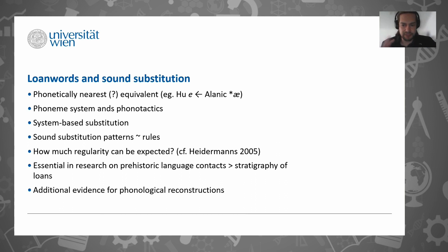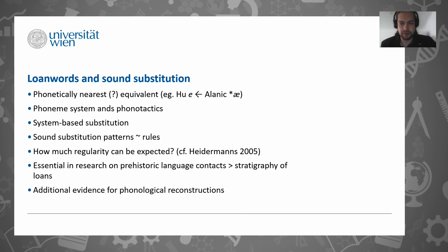What is especially important here is the idea of sound substitution, which basically means that when words are taken over from one language to another, the sound systems of the contact languages are usually not identical and the foreign sounds are substituted in some way. It is usually assumed that phonetically the nearest equivalent is used as the substitution, but there are also other ways. The main thing is that usually these sound substitutions have some kind of patterns - they are usually systematic - which is important because if we have different substitution patterns, we can often distinguish different layers of loanwords.